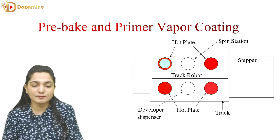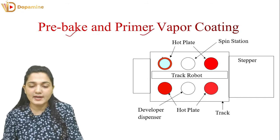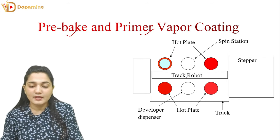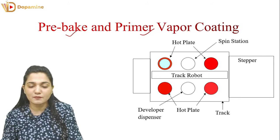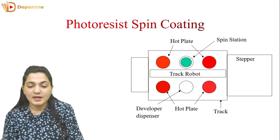After the wafer moves in, the first process step is pre-bake and primer coating. The Trek robot moves the wafer to a hot plate where pre-baking and primer coating take place on the wafer.